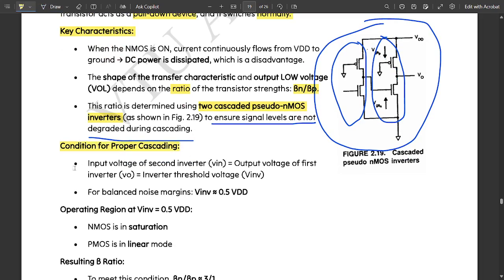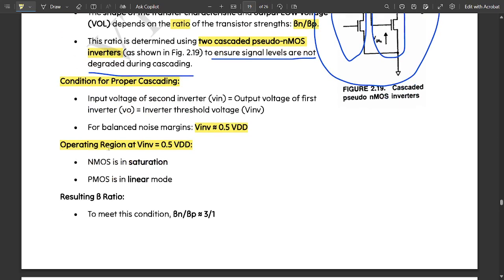The condition for proper cascading: input voltage of second inverter Vin is equal to the output voltage of the first inverter, equal to the inverter threshold voltage. For balanced noise margin, the threshold voltage inverter is slightly equal to half of VDD, that is 0.5 VDD. At V inverter equal to 0.5 VDD, the nMOS is in saturation and PMOS is in linear. The resulting beta ratio to meet this condition is beta_n by beta_p nearly equal to 3 by 1, or beta_n equals 3 times beta_p.